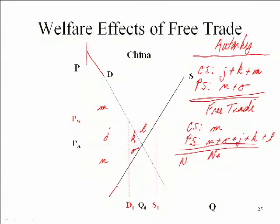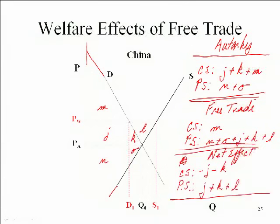So the net effect for China: consumer surplus goes down by minus J, minus K — consumers are worse off unambiguously. Producers gain J plus K plus L. The net effect for China is plus L. What we see in China is the opposite of the US: consumers lose because free trade raises the price of tires, producers gain, but producers gain more than consumers lose. On balance, the country has a net increase in economic welfare — just like what we saw in our general equilibrium models.